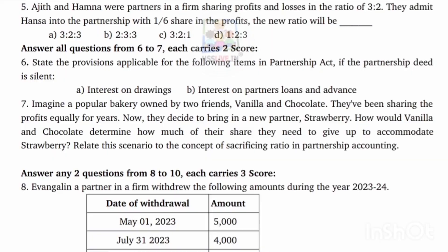Sixth question: State the provision applicable for the following items in partnership if the partnership deed is silent. First: interest on drawings — no interest on drawings is charged. Second: loan and advance — 6% per annum is the answer. If the partnership deed is silent, the interest on a partner's loan is 6% per annum.